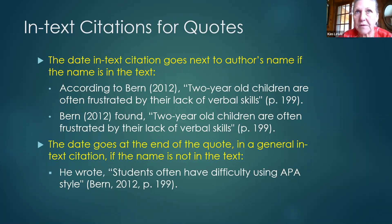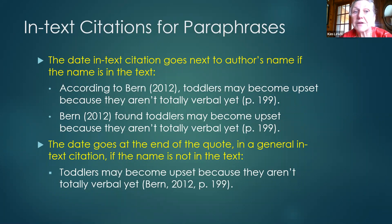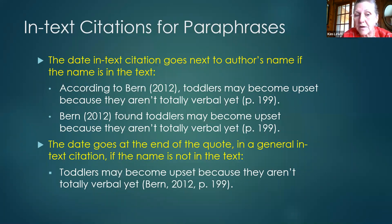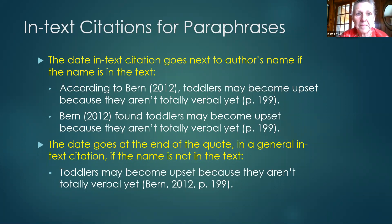In APA, just like MLA, you want more paraphrases than quotes. 'According to Burn (2012)...' followed by a paraphrase, then the page number at the end. Or 'Burn (2012) found...' with the page at the end. If Burn's name isn't in the text at all, put everything in the parentheses at the end: (Burn, 2012, p. 199).